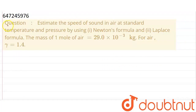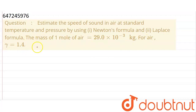Hello friends! This question has been asked to estimate the speed of sound in air at standard temperature and pressure by using: 1. Newton's formula and 2. Laplace's formula. The mass of 1 mole of air is equal to 29.0 × 10⁻³ kg. For air, gamma is equal to 1.4. So we need to find the speed of sound using Newton's formula and also by using Laplace's formula.